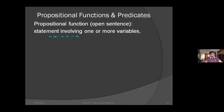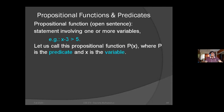When you say x minus 3 is greater than 5, this is an open statement. Let's consider this as P(x). You can see the function has a parameter. This propositional function is P(x) — P is the propositional function or predicate, and x is the variable.